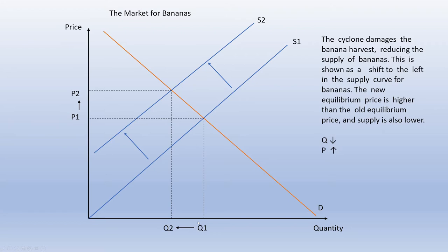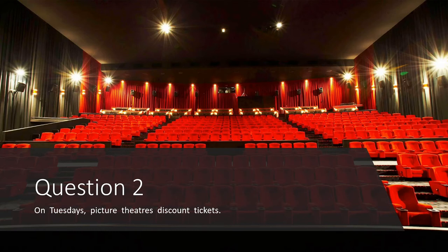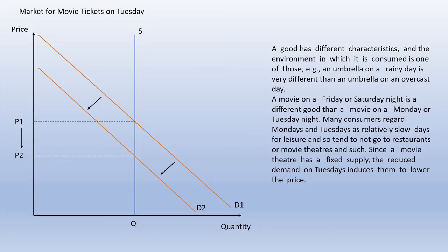Question two: on Tuesdays, picture theaters discount tickets. This is a sneaky question. Think about the supply of tickets at a movie theater — not each different movie, just the total number of seats they have, the total tickets they can sell. If you try to draw that on a supply and demand diagram, you'll find we have a vertical supply line, because the number of seats at the movie theater is fixed. You can't increase or reduce them, at least not in the short term, so supply is naturally vertical regardless of price.